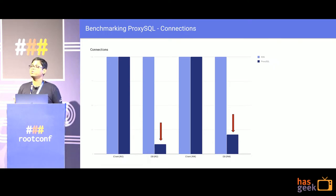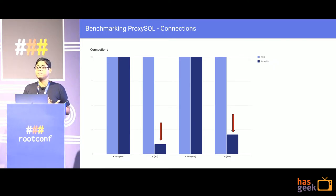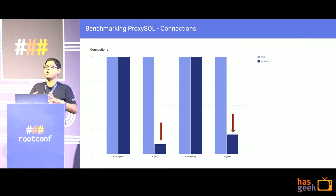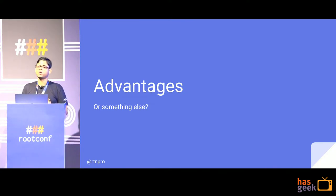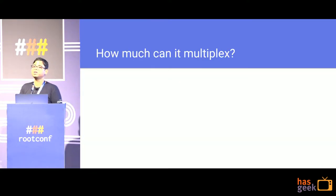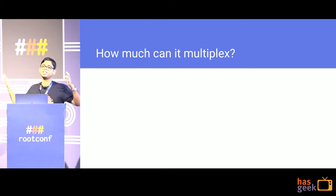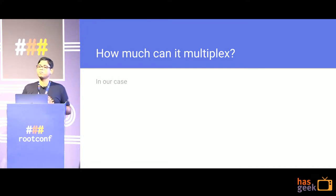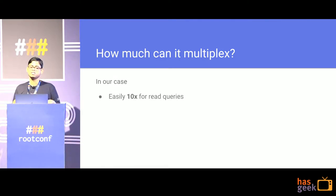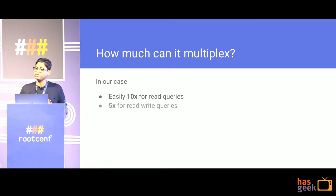ProxySQL delivers almost 90% of the performance while maintaining just one-tenth or one-fifth of the connections to the database. This gives you enough room to scale on top of your current database setup. Based on our benchmarks and staging and production tests, we had easily 10x gains for read queries and 5x gains for write queries — pretty good numbers.